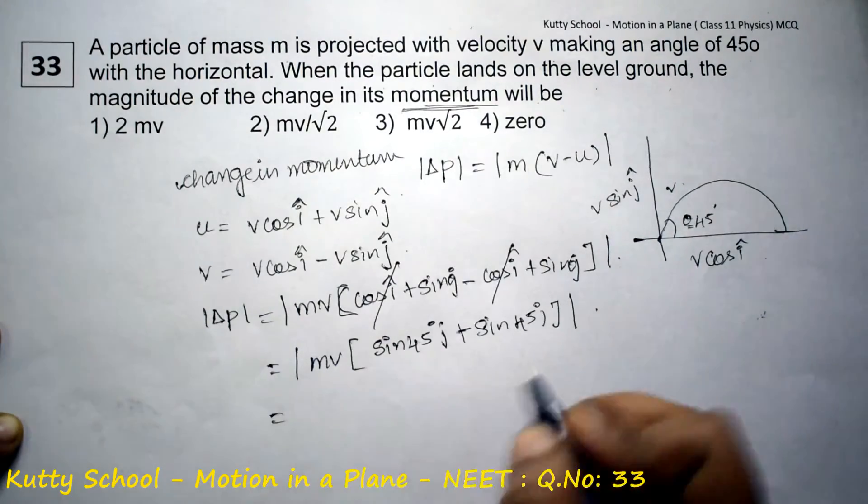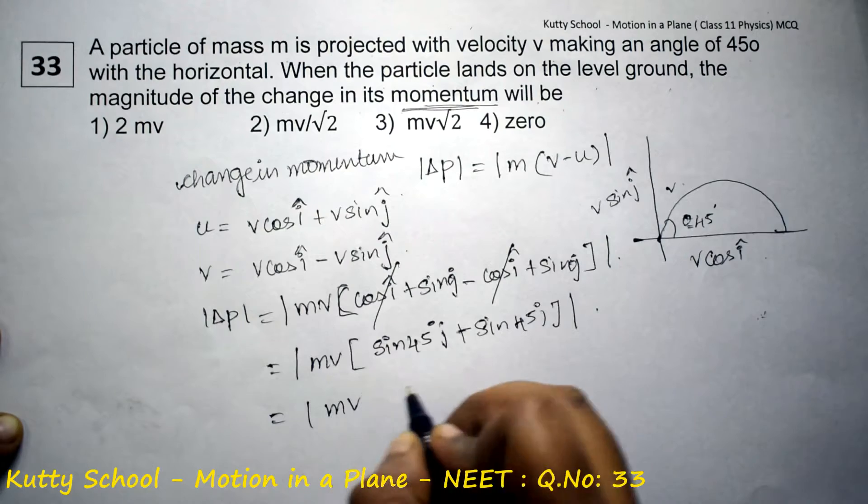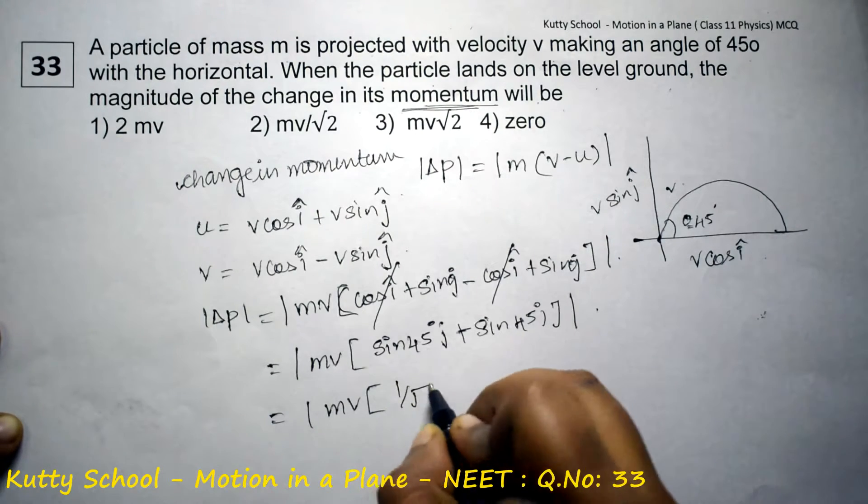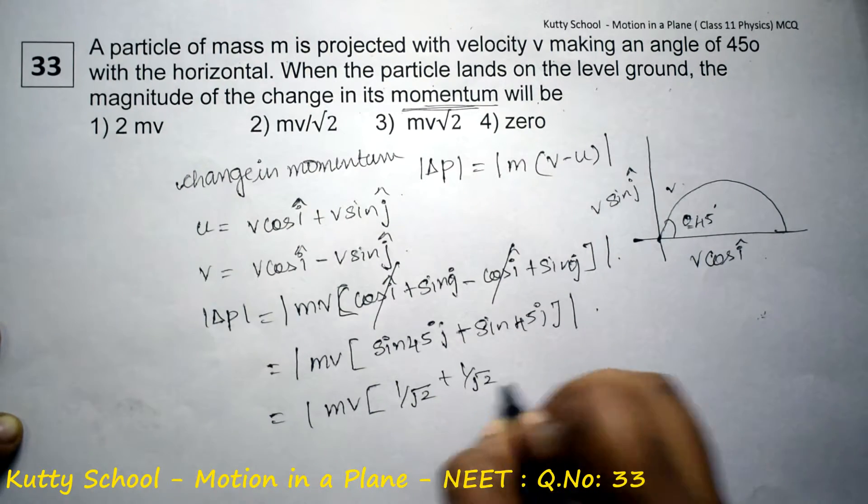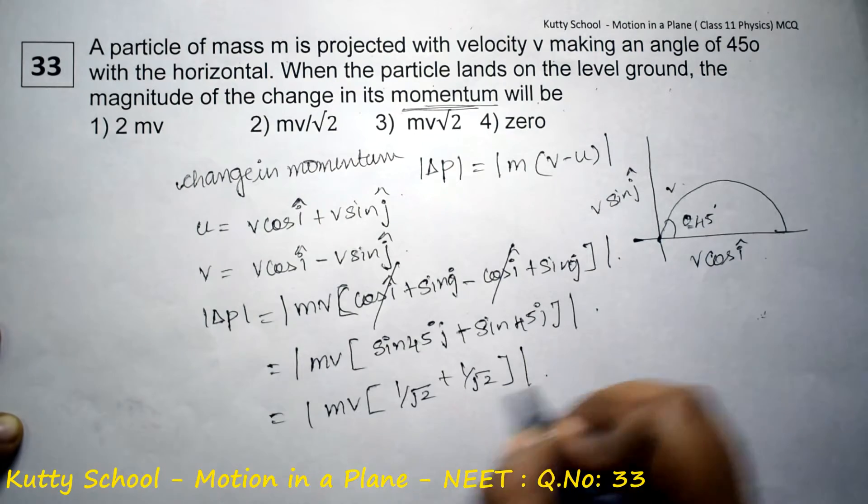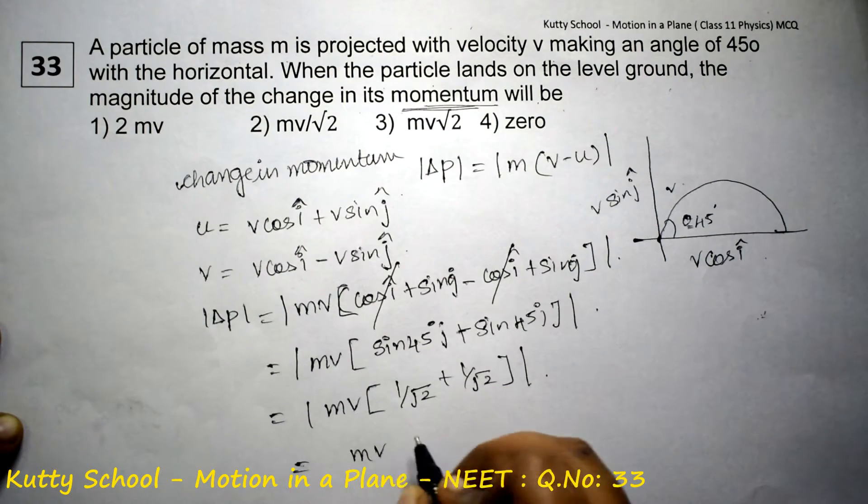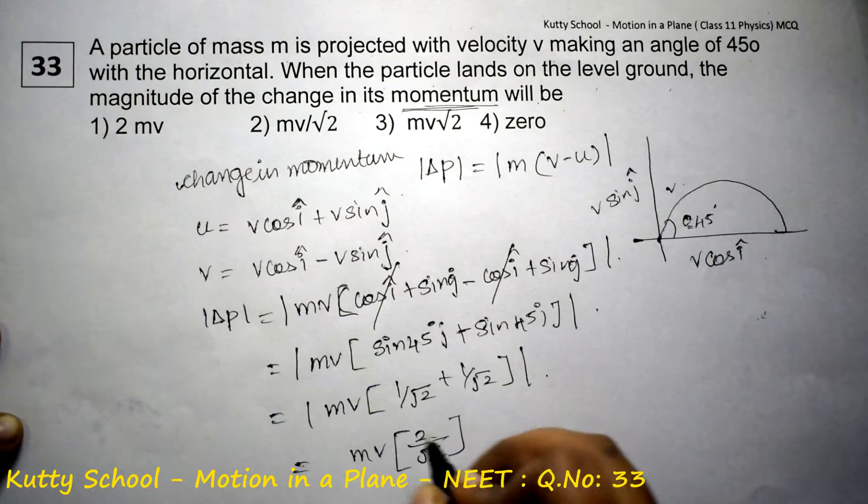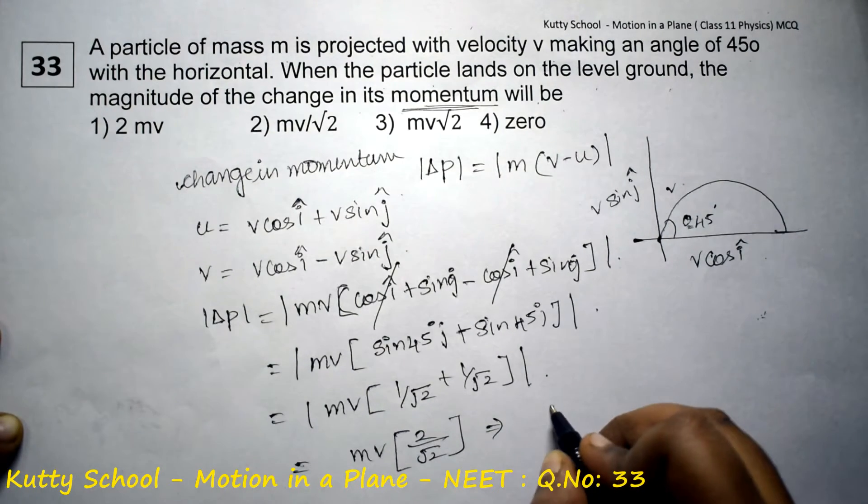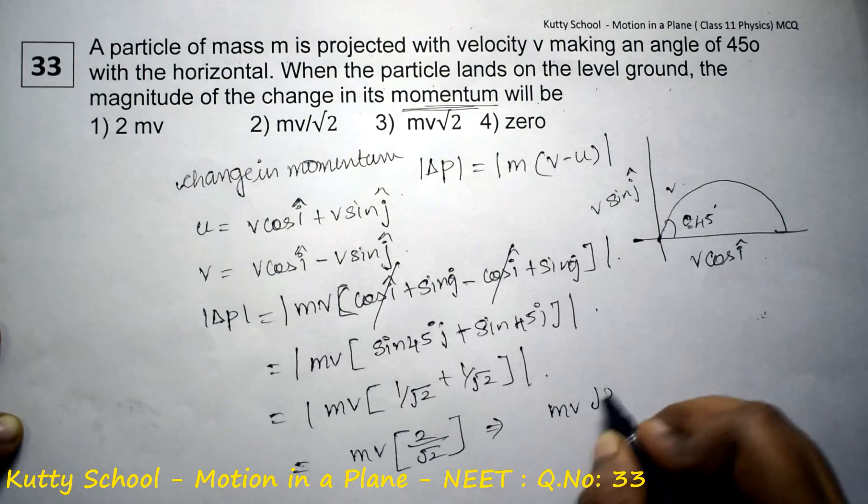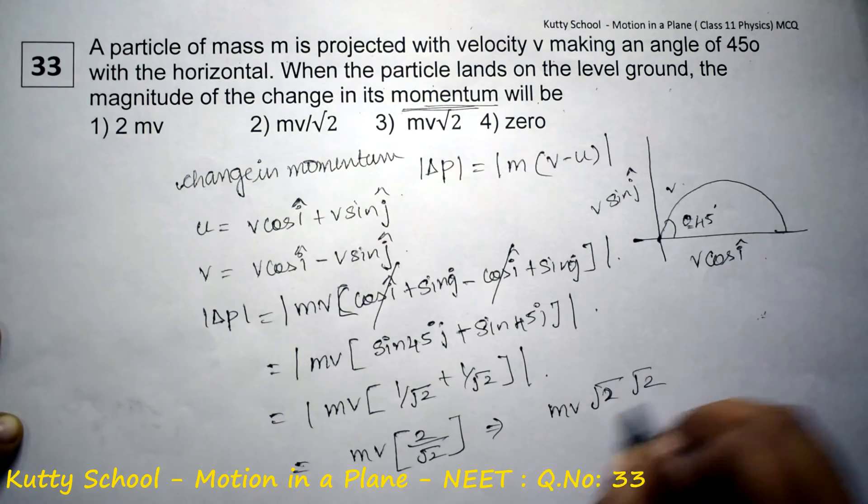Sin 45 degrees is 1 by root 2, so mv into (1 by root 2 plus 1 by root 2). That equals mv into 2 by root 2.